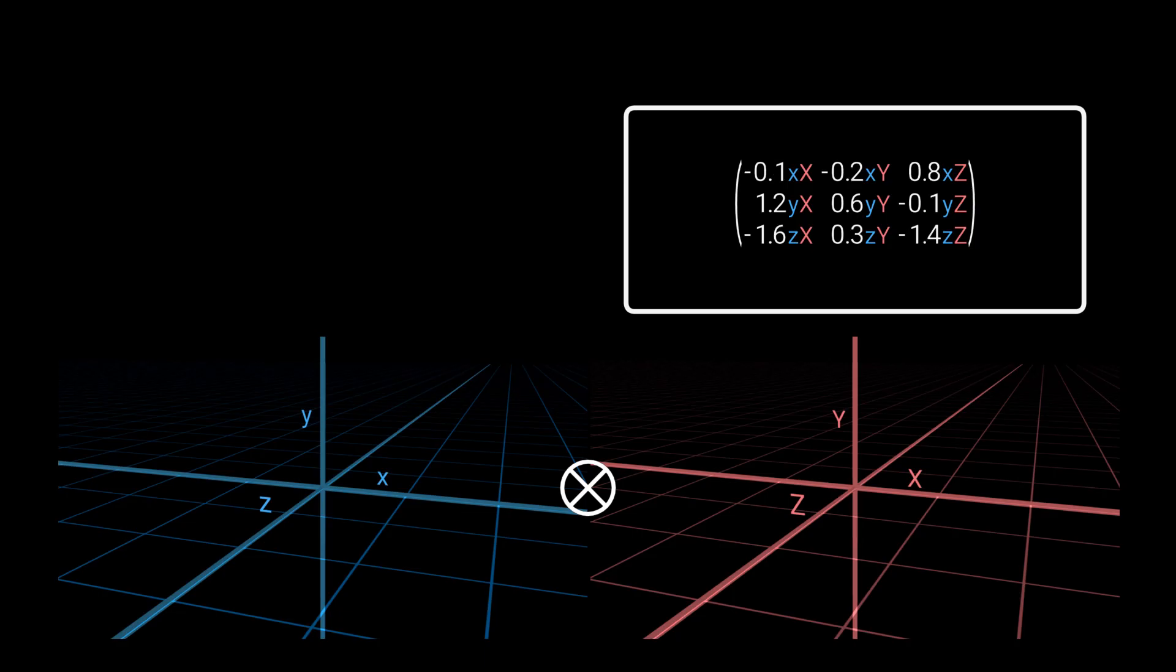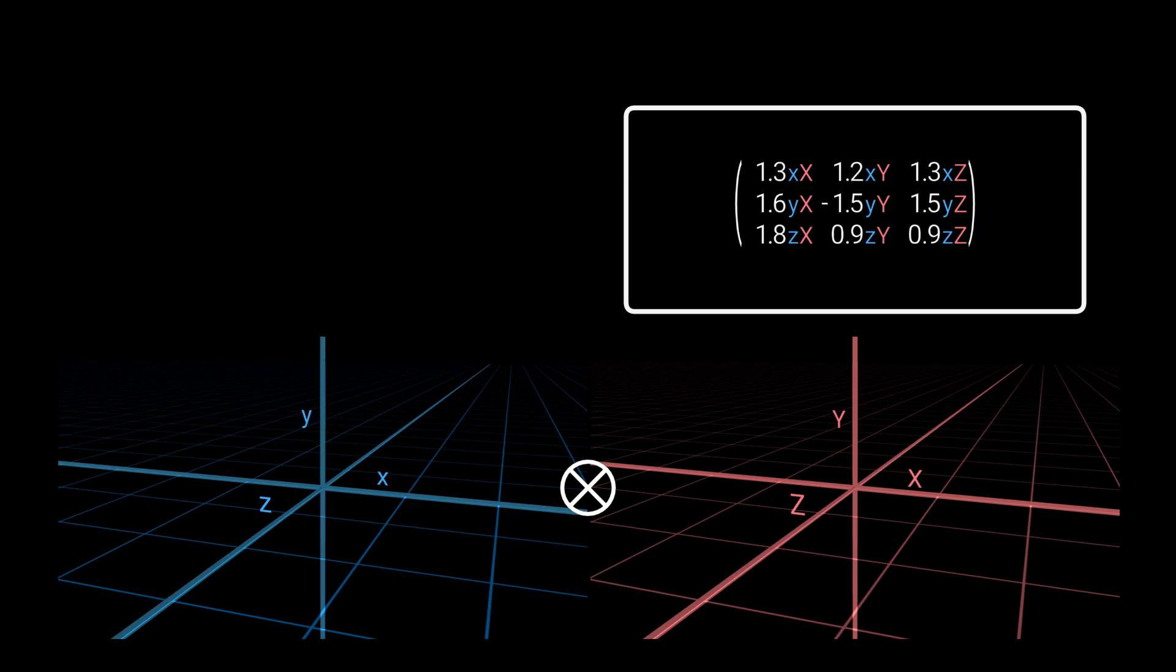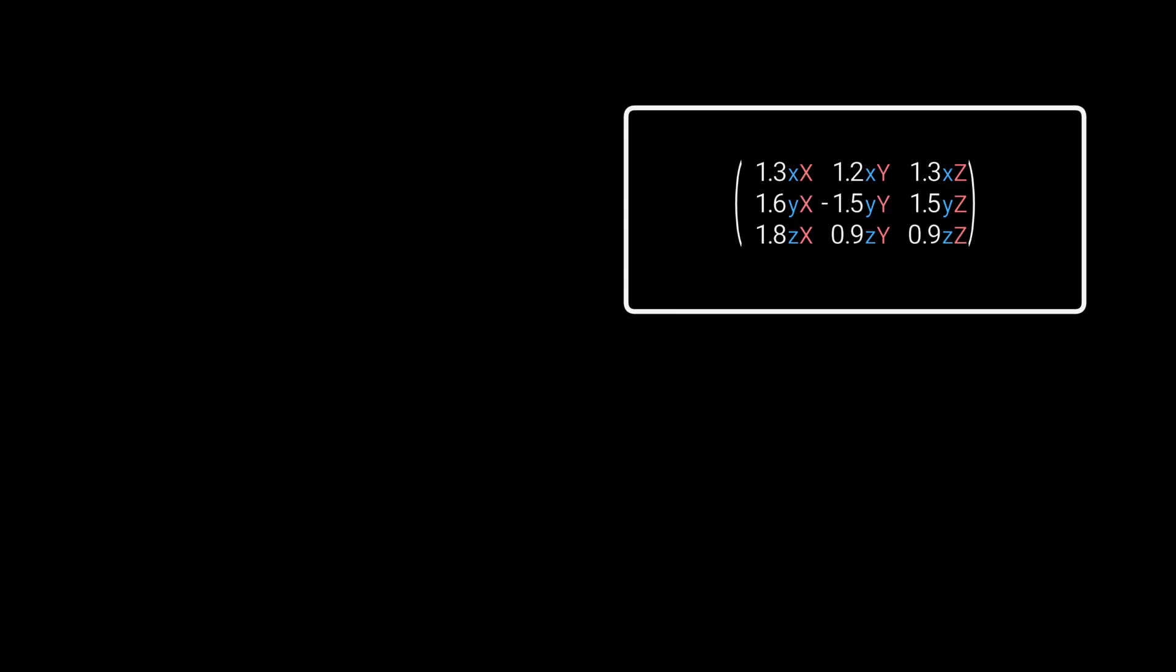This space contains all possible three-by-three matrices. This space has all the properties of an ordinary nine-dimensional vector space. We can arrange the nine components in a row if we prefer, or in a column. But the tabular form has some advantages here. We'll see some of them shortly. Scalar multiplication and addition work element-wise as usual. Here's addition, for example.